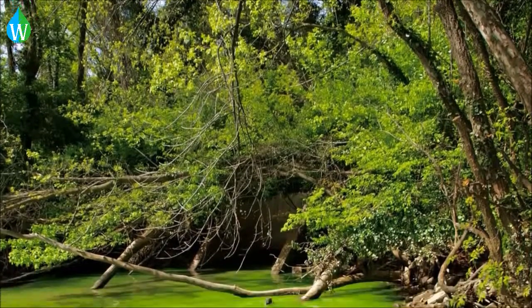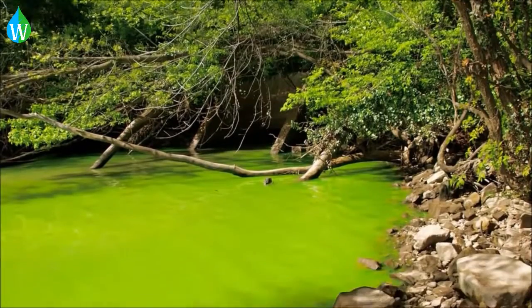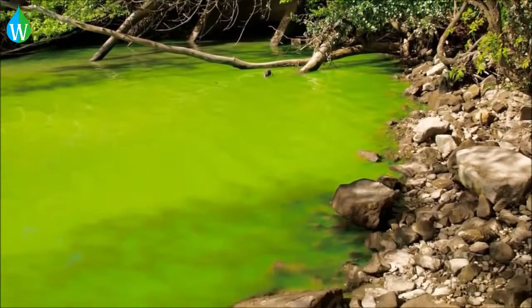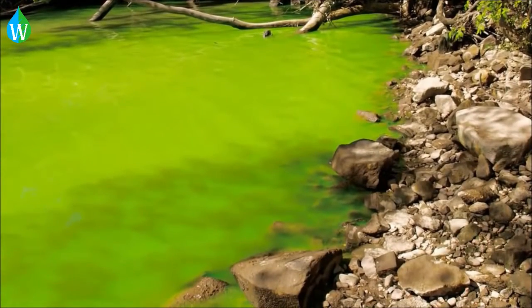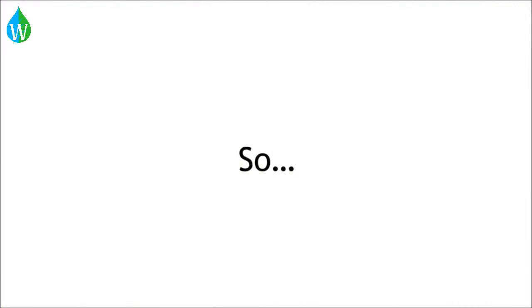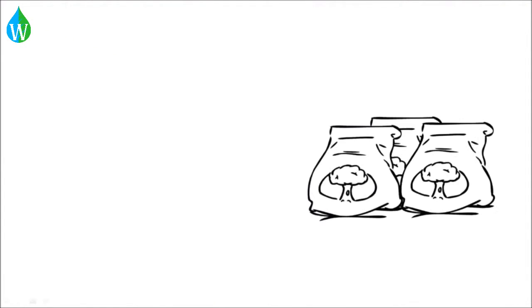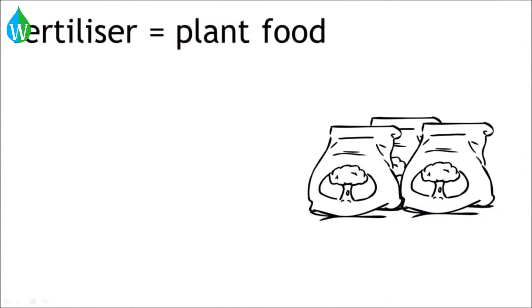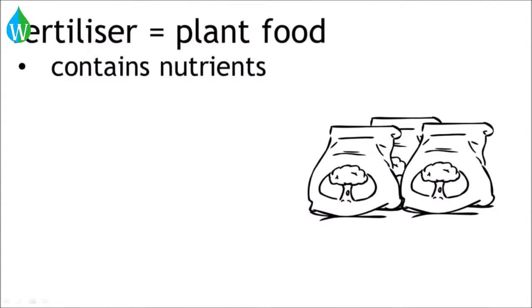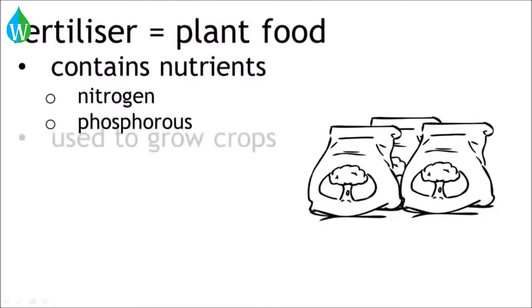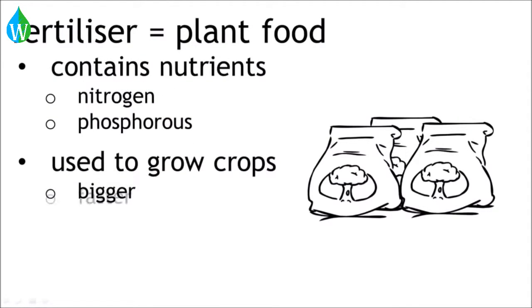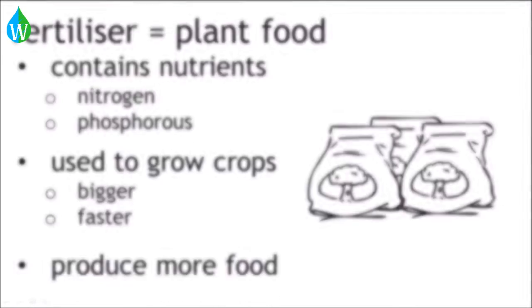There can be problems with putting too much fertilizer into a natural system, and some of the problems with fertilizers are explained in other videos. So, a fertilizer is a plant food that contains nutrients such as nitrogen and phosphorus, and we use it to grow our crops bigger and faster so they produce more food.